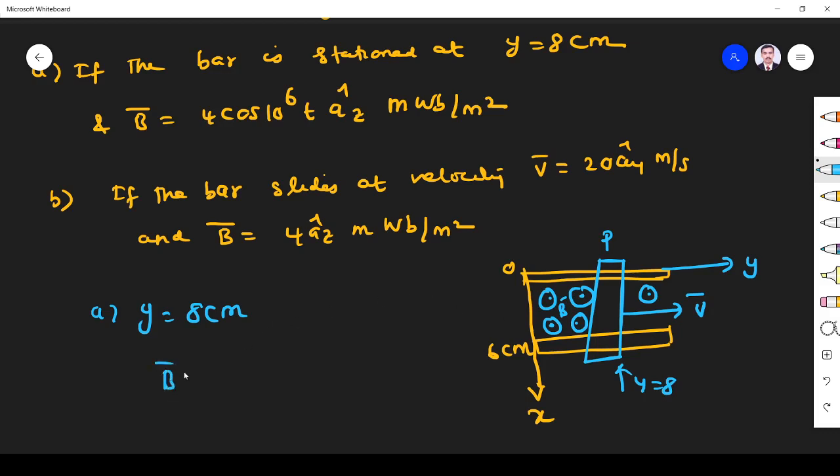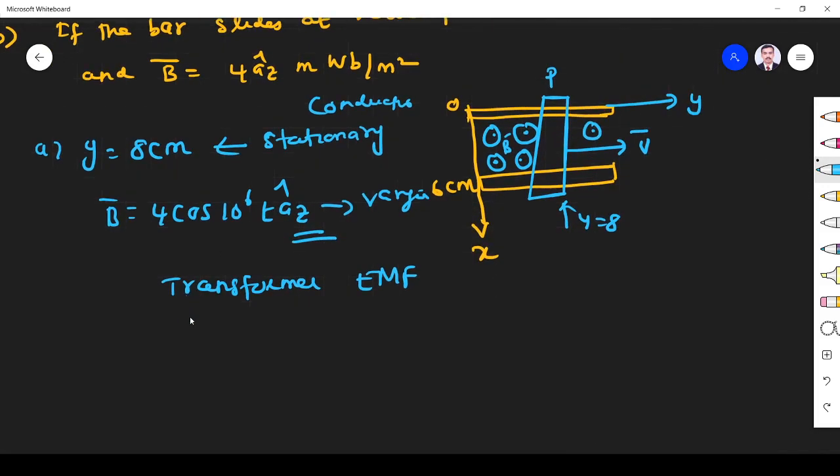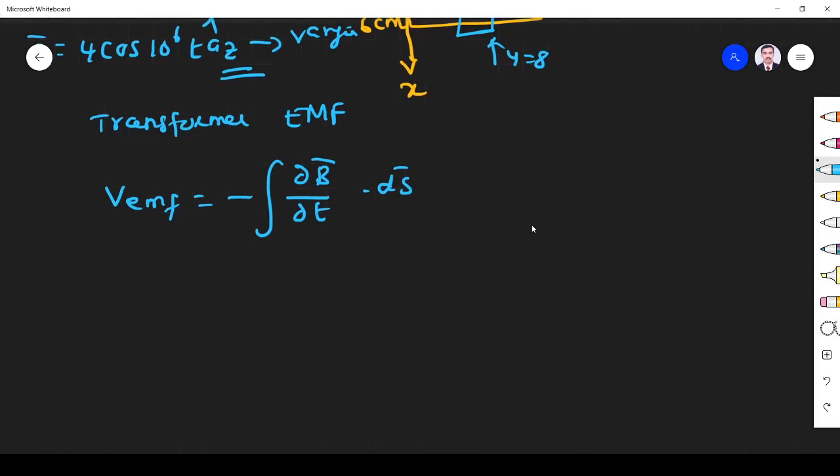Let me tell you that dot indicates it is coming out of the screen. First, what we have to find: if the bar is stationed at y equals 8 centimeters, and B is 4 cos 10^6 t az. Here the conducting bar is at station, so conductor is stationary and magnetic field is varying. This means it is nothing but transformer EMF.